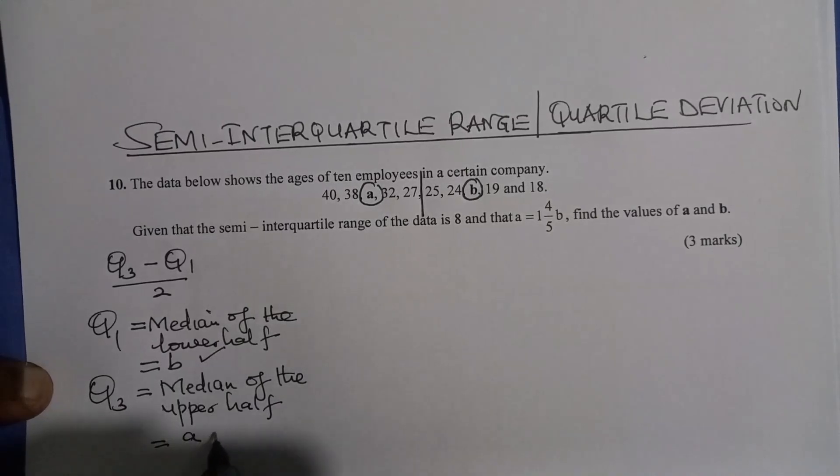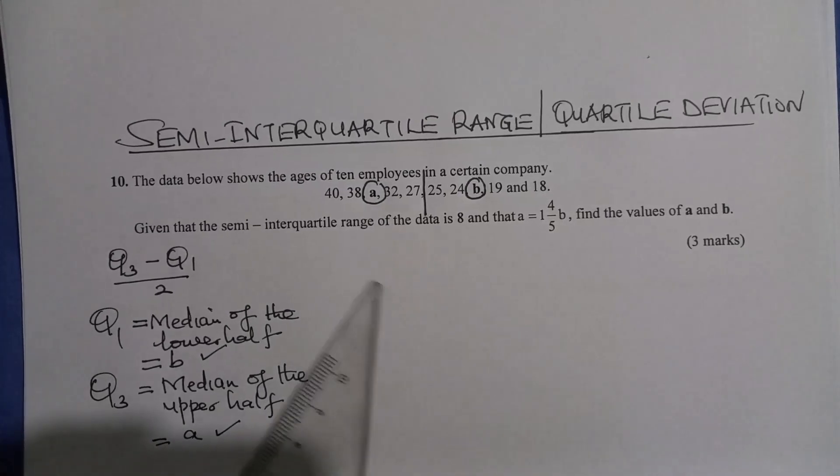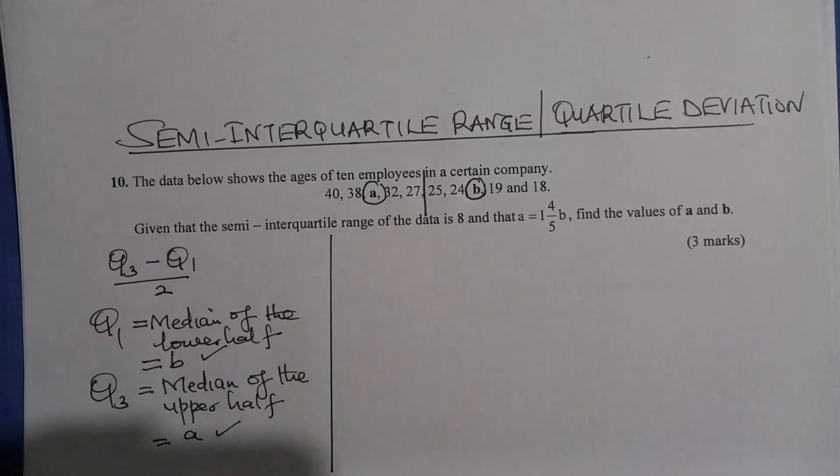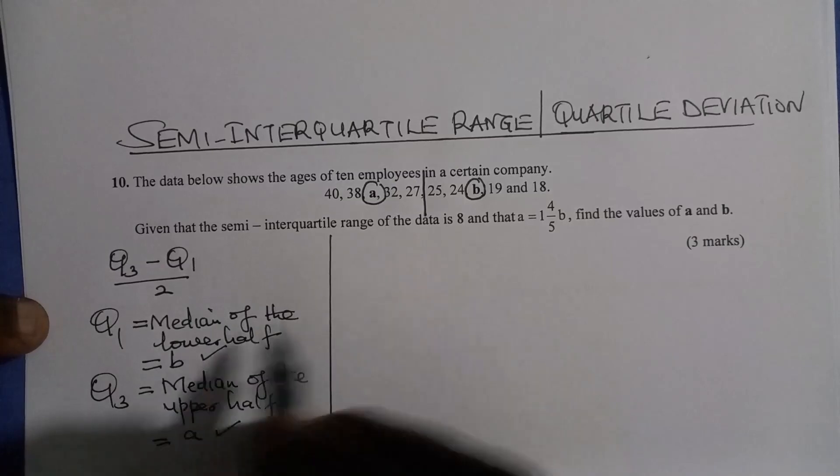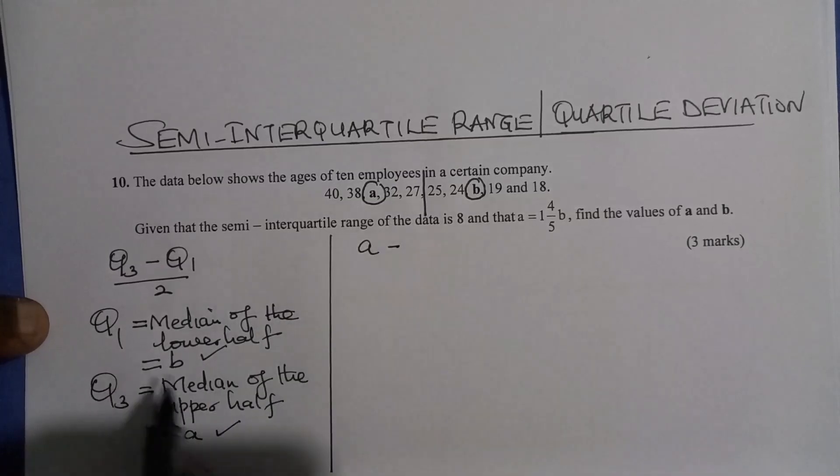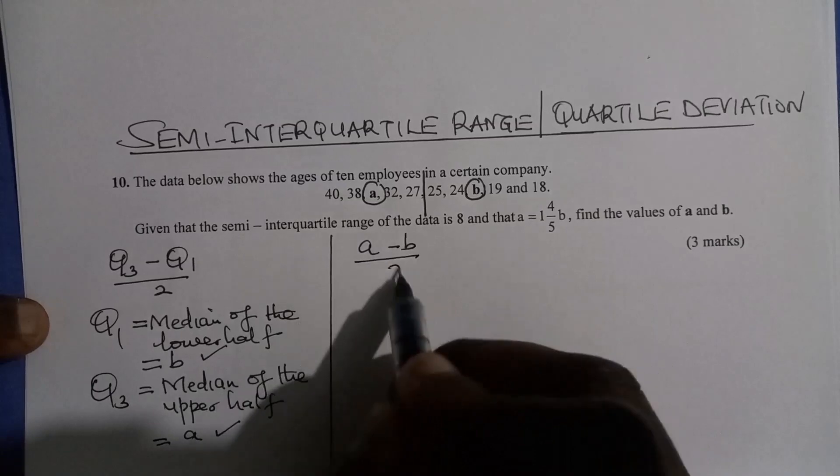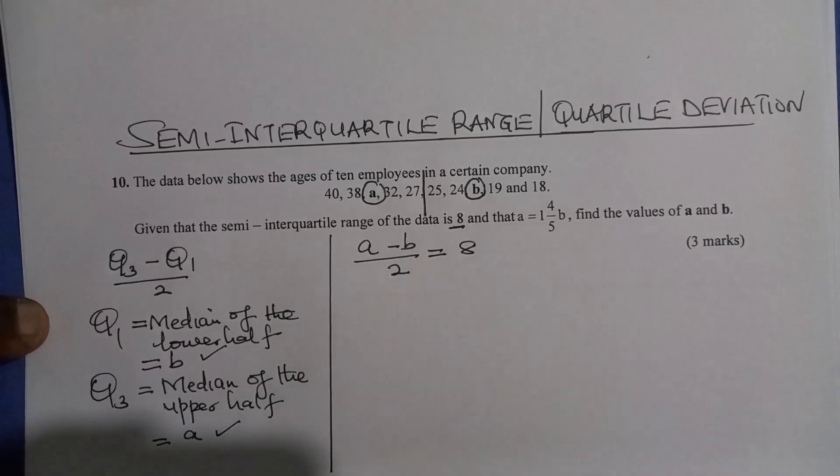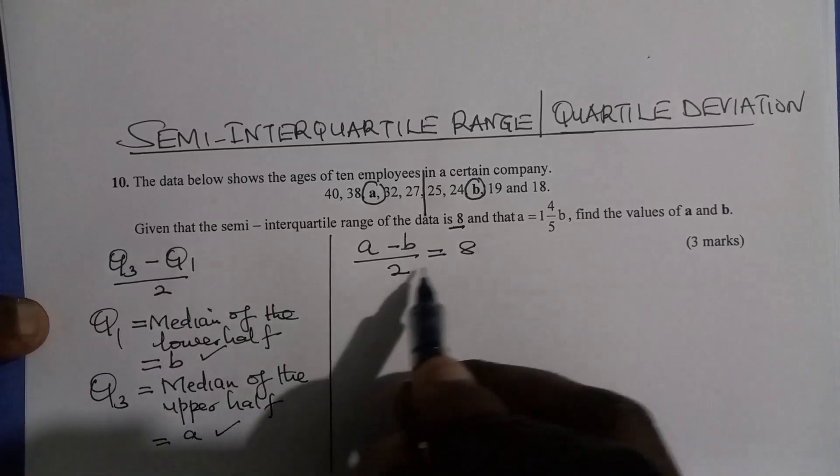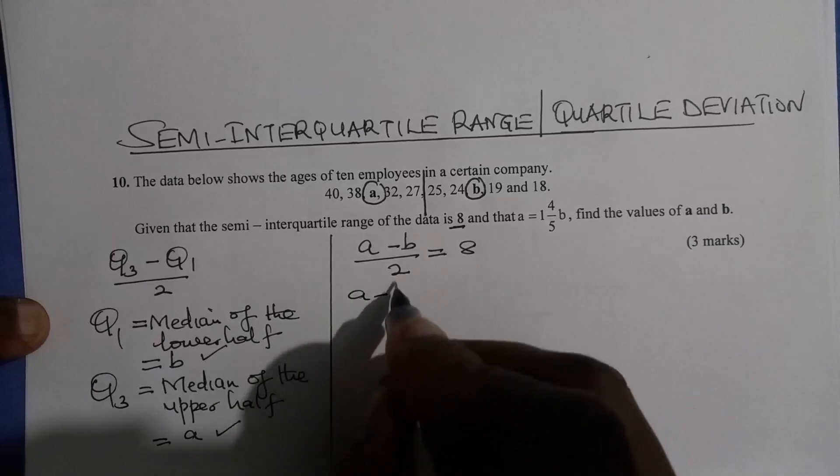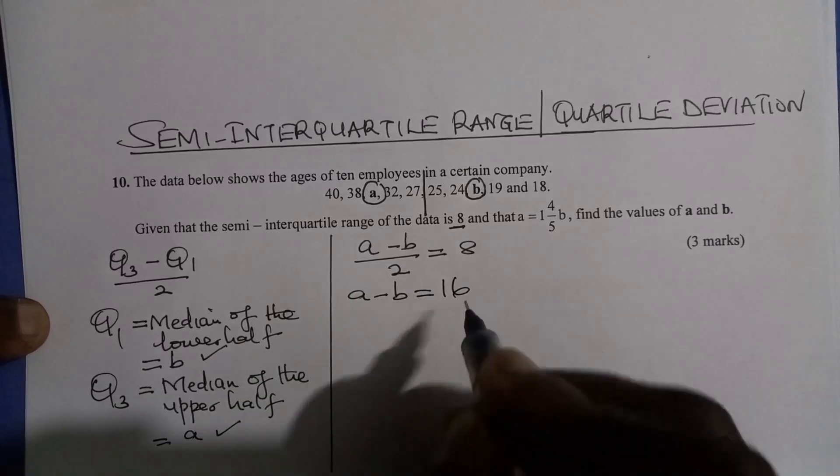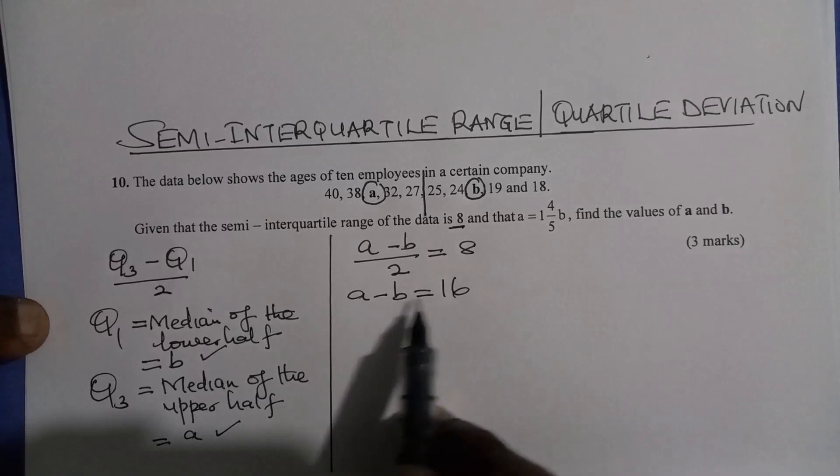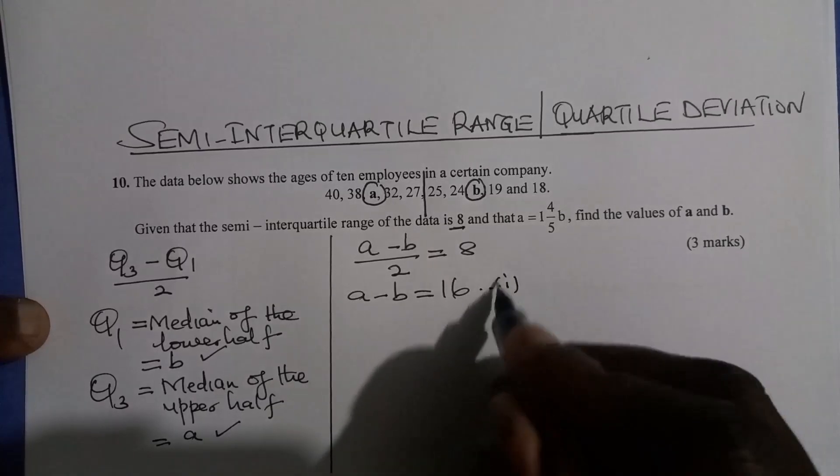Now you have Q1 and you have Q3. So the semi-interquartile range is given by Q3, which is A, then Q1 is B, divided by 2. And you're given that this semi-interquartile range is 8. So multiplying both sides by 2, you get A minus B is equals to 16. Now you can't get the value of A and B in this equation since you have two unknowns. So it means we must have something else.